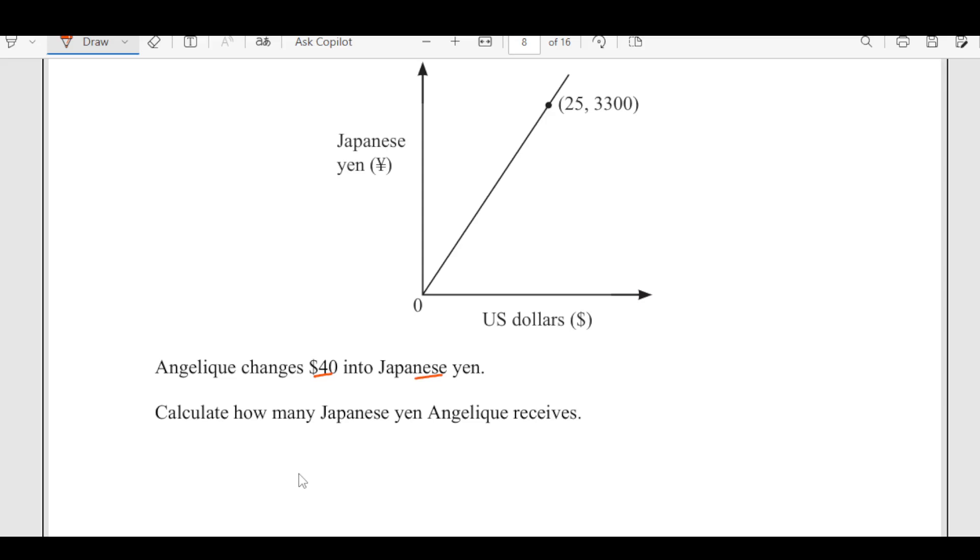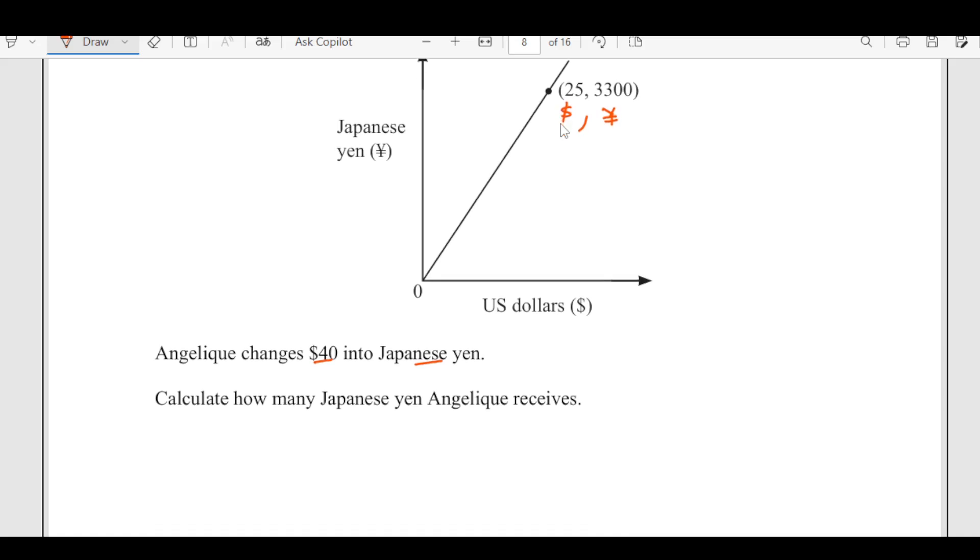We will see from here, we have 25 along x axis which is US dollar, and along the y axis we have Japanese yen. So 25 dollars are equivalent to 3300 Japanese yen and we are looking for 40 dollars. What will be that?